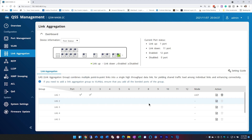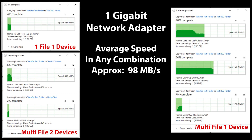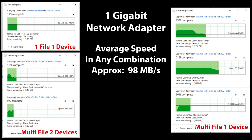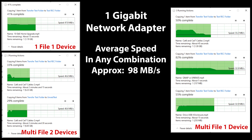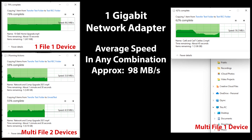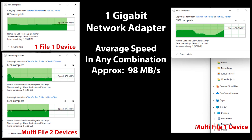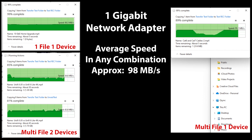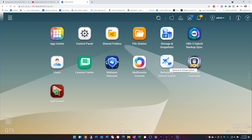This varies from switch to switch so you'll have to look at your own documentation. Before we configure the NAS, let's baseline the test results using a single network adapter. We'll copy a single file, multiple files to the same destination, and multiple files to two different destinations. As you can see from the test results, the throughput is pretty consistent, sitting at around 98 megabytes per second.